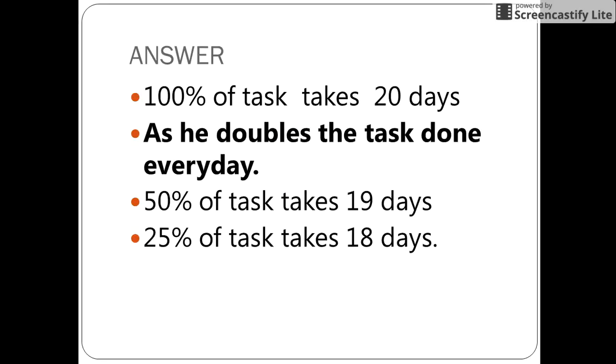Let us first analyze the small information given in the puzzle. The man takes 20 days to complete 100% of the task. Also, he doubles the rate of doing work each day. So, let us approach this puzzle backwards.